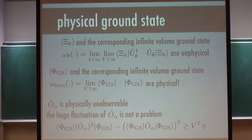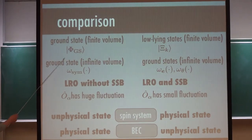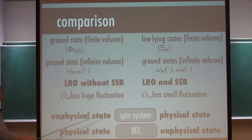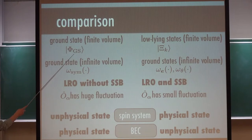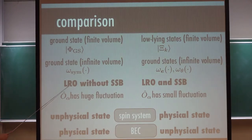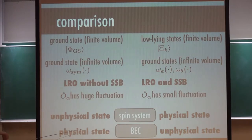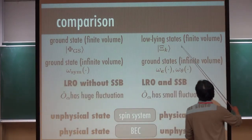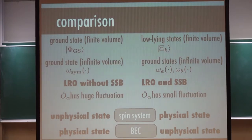In this case, this is a comparison between BEC and the spin system. One way is to start from the finite volume ground state, take the infinite volume limit, then you get something with long-range order but no SSB and huge fluctuation — which is unphysical for the spin system, but for the boson system this is what is realized in cold atom experiments. This is a state with an explicit symmetry group. In mean-field calculation, even if you're working on bosons, you get the symmetry-broken state, and many people are happy with this, computing gauge-invariant quantities. There is no error for gauge-invariant observables.